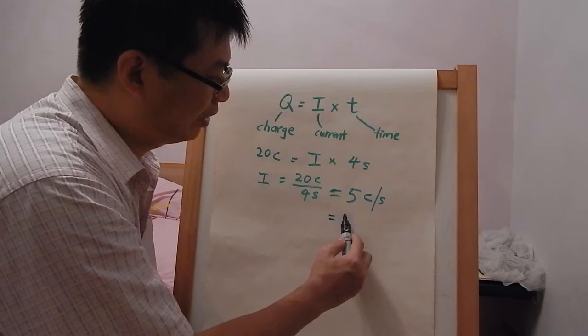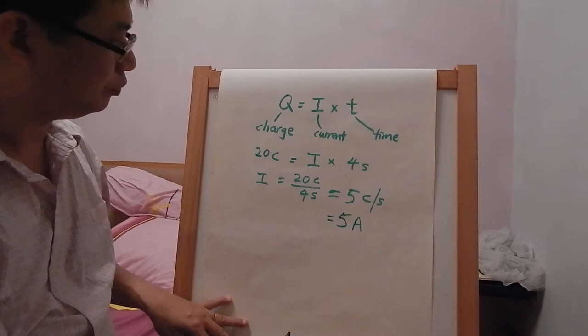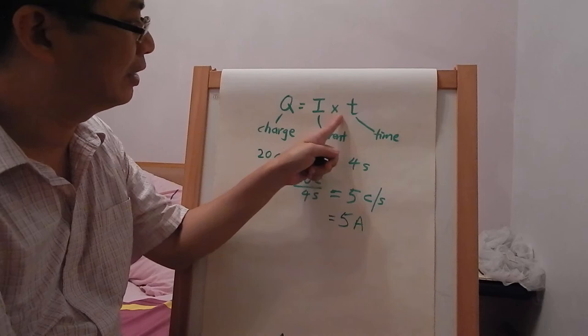So let's revise again: Q equals I times T. Remember this formula.